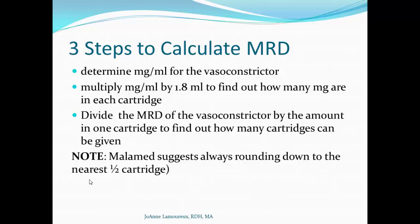Three steps to calculate the vasoconstrictor MRD: first, determine mg/mL for the vasoconstrictor; then multiply by 1.8 to find mg per cartridge — same steps as for local anesthetic. Once you know mg per cartridge, divide that into the MRD for the vasoconstrictor to determine how many cartridges you can give. Malamed suggests always rounding down to the nearest half cartridge, as it is safer to use less, especially with vasoconstrictors.